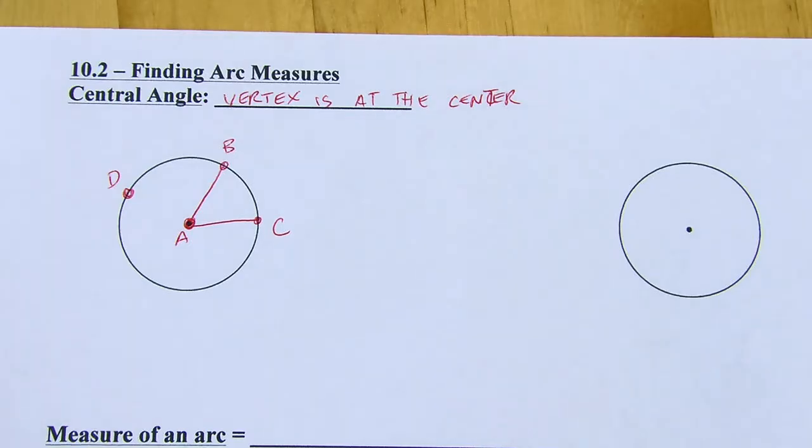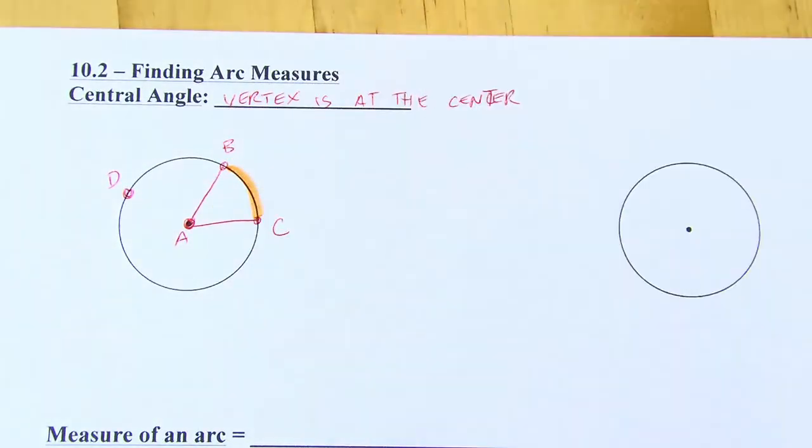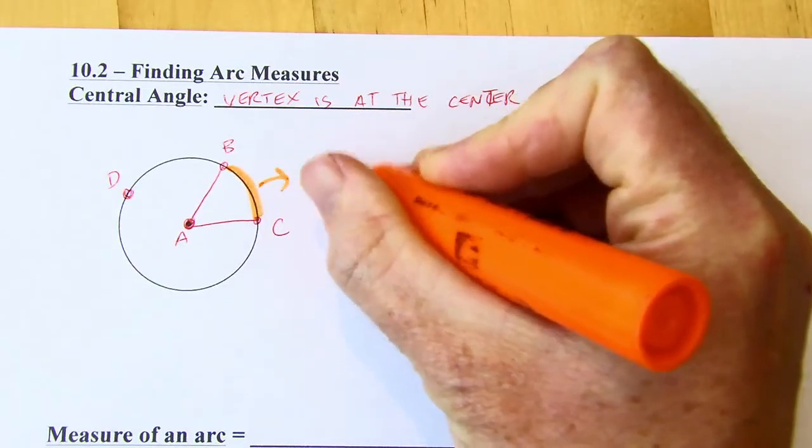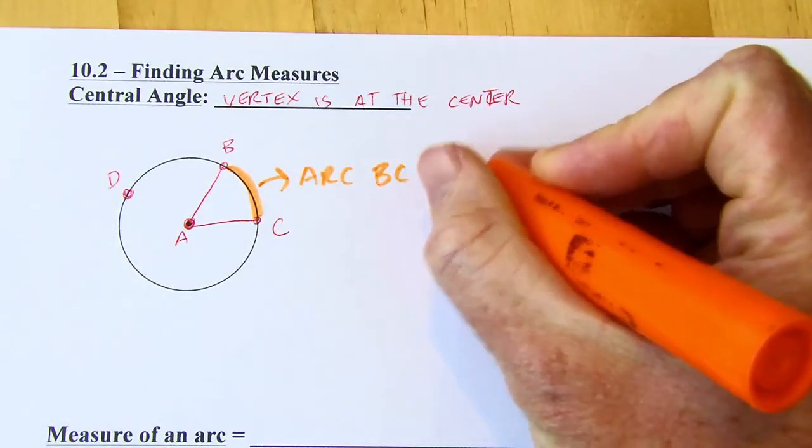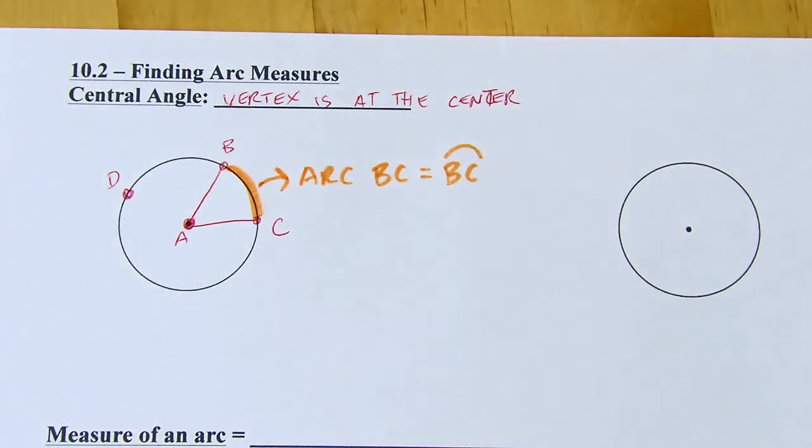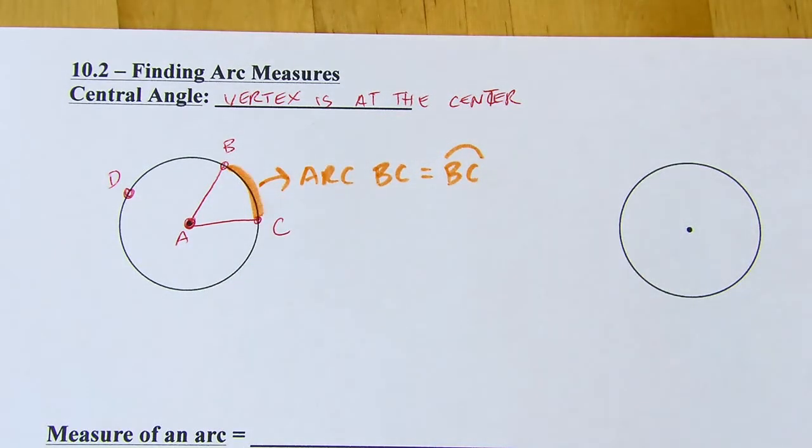So I want to talk about this part of the circle that I'm going to highlight here. This is called an arc. So you could call this arc BC, or if you wanted to use just a symbol for that instead, you could just write BC with a little arc like that. And notice I'm not shading in the slice of the circle there. It's just the part on the outside of the circle. So it's kind of like part of the circumference.